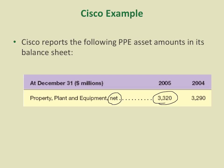For example: what is the original historical cost? What are those assets? What is the accumulated depreciation through 2005? What depreciation method was used? Those questions will be answered in the footnote related with this line item, which we're going to talk about in the next slide.